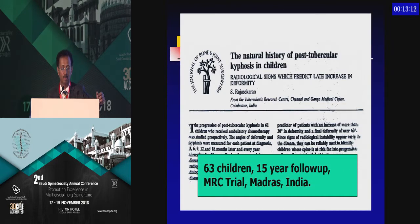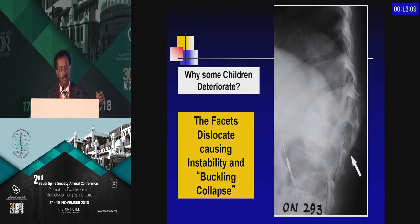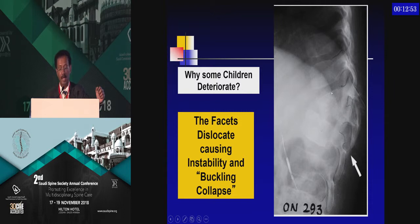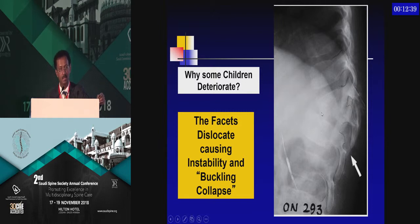In this 15-year study, we followed 63 children and found that one of the most important factors leading to gross collapse is the event of facet joints dislocating when there is an anterior collapse. Most of us, when we look at radiographs, focus on the anterior column and how much the body is destroyed, but we do not look at the facet joints. When the facets dislocate, biomechanically it means the death of a column, because the anterior deficit is there due to disease attrition, and the posterior column is gone functionally due to facet dislocation.